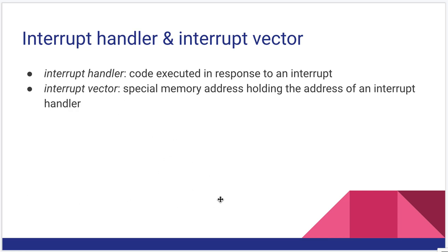A couple of terms: the interrupt handler and the interrupt vector. The interrupt handler is the code that we run when an interrupt happens — it's a place in memory that we jump to, execute some code, and when we're done, we jump back. It's usually just a subroutine. The interrupt vector is a memory address that holds the address of an interrupt handler. The vector is not the interrupt handler's address itself — it is a memory location that the kernel or the 6502 knows to find the address of our handler.